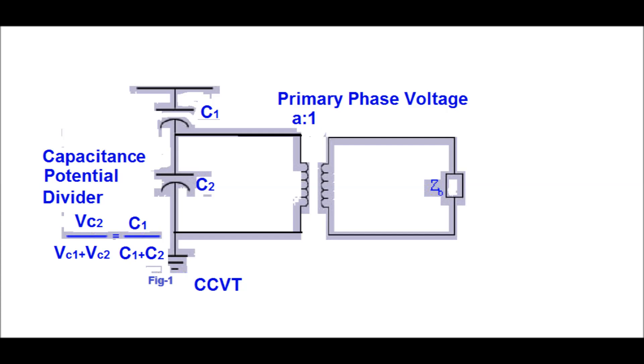A1 to 21 is the transformer turn ratio, ZB is the secondary side burden impedance. The voltage across C2 is VC2 = Vin × C1/(C1+C2), where VC1 is the voltage across capacitor C1 to be measured.